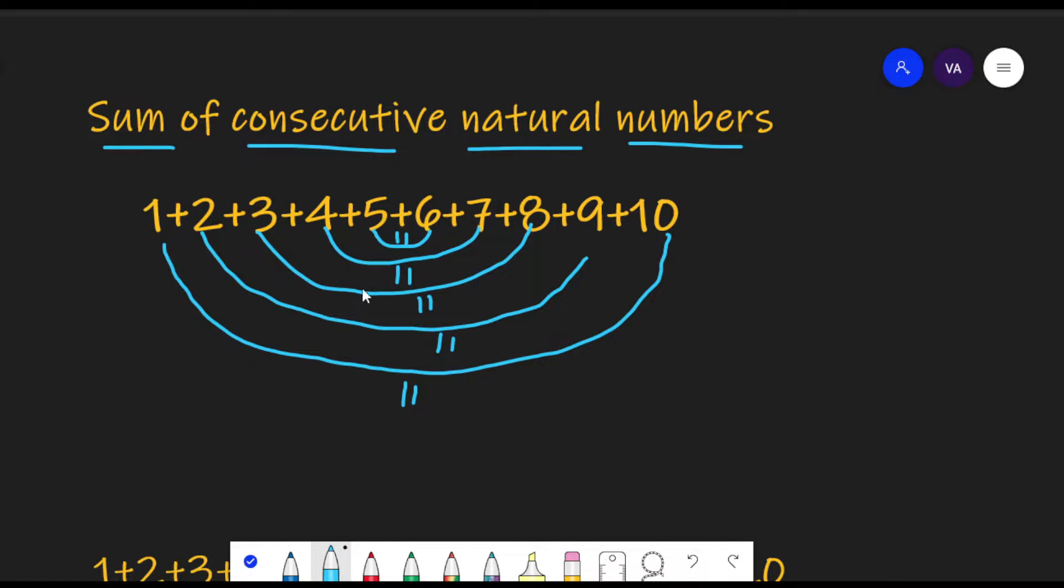So we have 5 pairs with sum as 11. So what do you get from this? That we have 5 pairs with sum equal to 11. That means 11 into 5, 55 will be the sum of these 10 numbers.